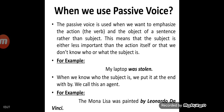The passive voice is used when we want to emphasize the action (the verb) and the object of a sentence rather than the subject — when we do not give more focus on the subject. This means the subject is either less important than the action itself, or we don't know who or what the subject is. For example, 'my laptop was stolen' — here we don't know who the subject is in active voice, so we change it to passive. When we do know the subject, we place it at the end with 'by' — this is called the agent. For example, 'The Mona Lisa was painted by Leonardo da Vinci.'